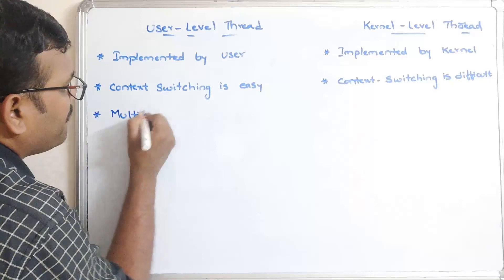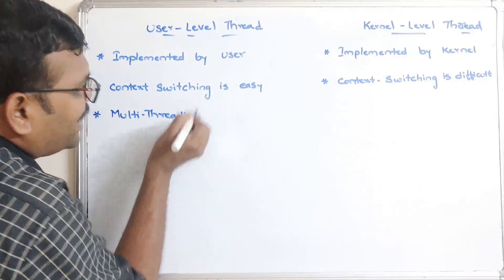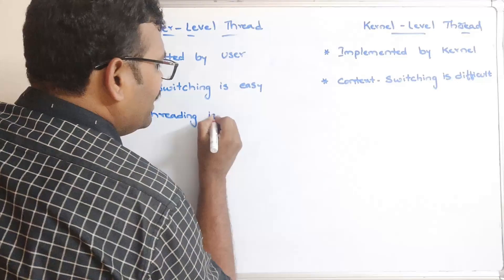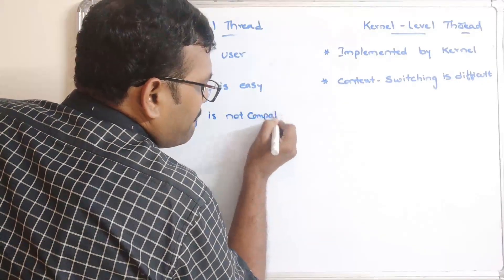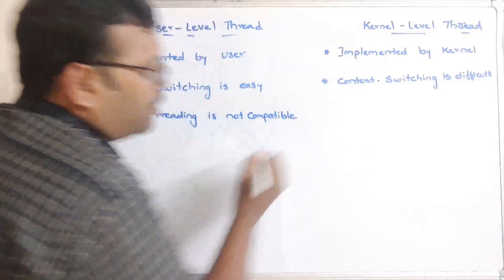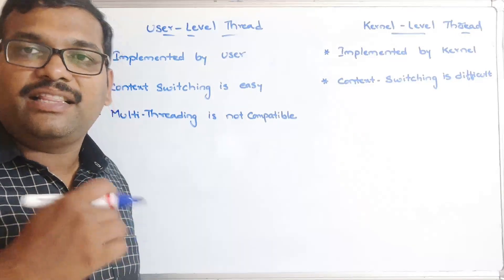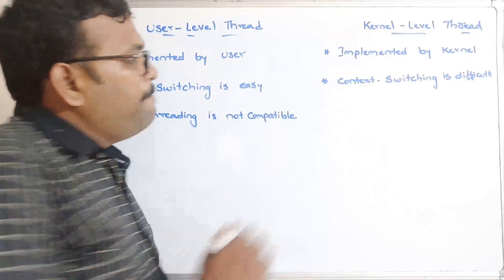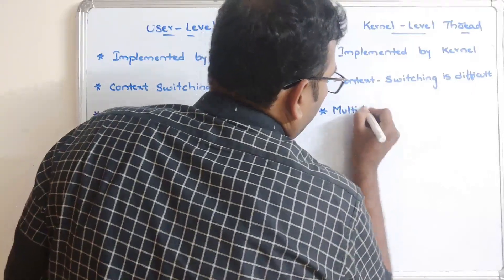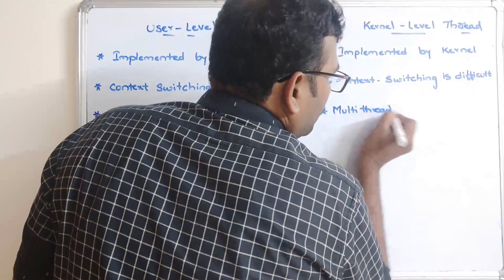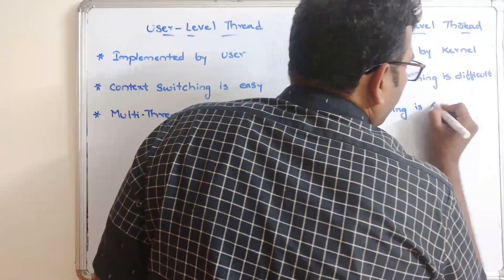The third difference is multi-threading. For user-level threads, multi-threading is not compatible — everything is implemented like a single-threaded process. For kernel-level threads, multi-threading is compatible, meaning multiple threads can run concurrently.